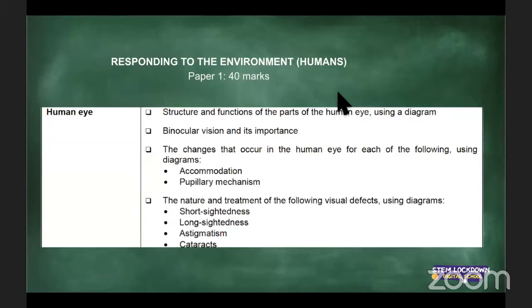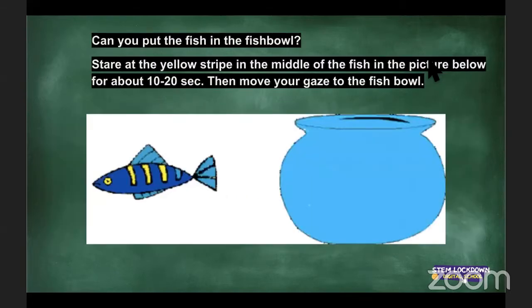This is part of 'Responding to the Environment,' which includes the ear and the nervous system, and it's worth 40 marks in Paper One.